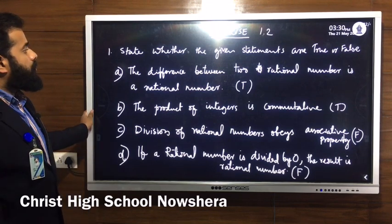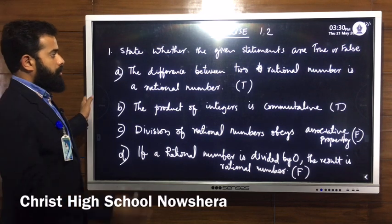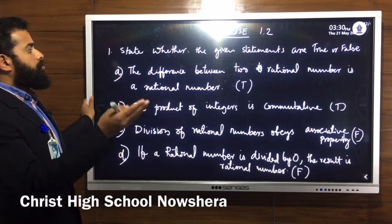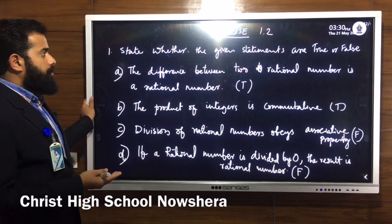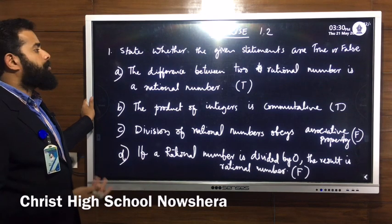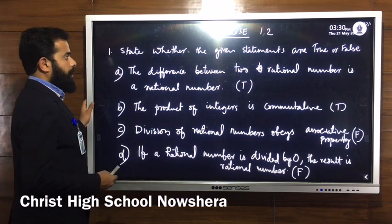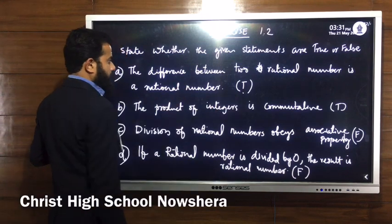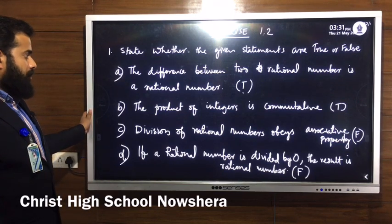First statement: the difference between two rational numbers is a rational number. Think about the properties we have checked — whether rational numbers hold the closure property under subtraction. When we subtract two rational numbers, the answer will also be a rational number, so the statement is true, because it holds the closure property under subtraction.